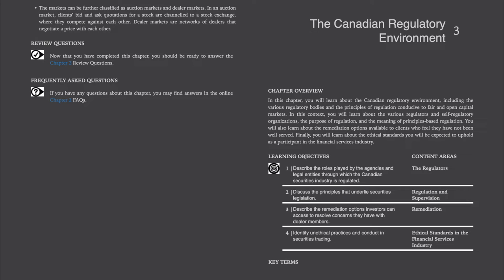CSC, Volume 1, Chapter 3: The Canadian Regulatory Environment. Overview. In this chapter, you will learn about the Canadian regulatory environment, including the various regulatory bodies and the principles of regulation conducive to fair and open capital markets. You will learn about the various regulators and self-regulatory organizations, the purpose of regulation, and the meaning of principles-based regulation.